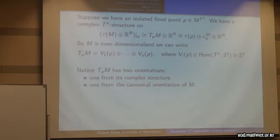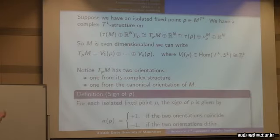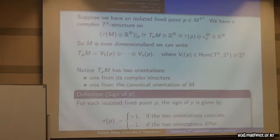Notice that the tangent space has two natural orientations: one comes from its complex structure and the other from the natural orientation on the manifold that comes from this stably complex structure. As has been done many times before, we define the sign of the fixed point P to be plus one if these two orientations coincide and minus one if they are different. If you have an almost complex structure then the signs are always plus one.